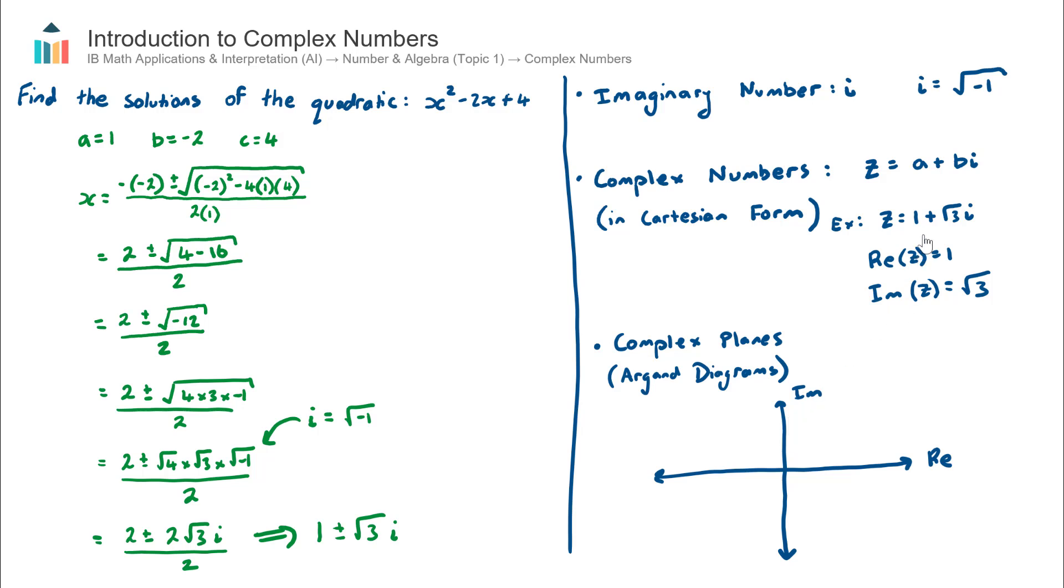Now if I want to plot this particular - and I'll choose a different color here - this particular complex number here that I've defined as z onto my complex plane, it's quite simple. All I need to do is to find the real component, so let's just say this is 1, 2, 3.